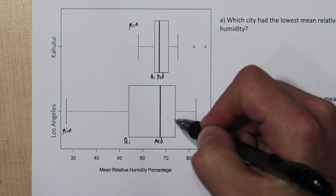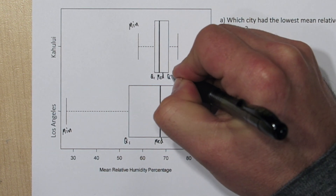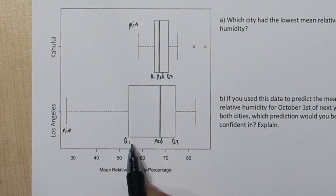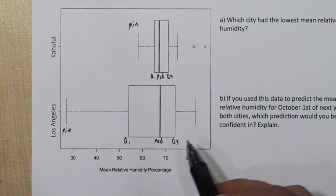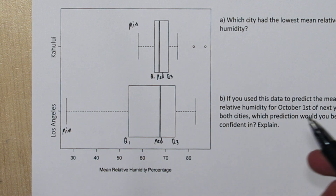The last piece of our box on the right is quartile 3. Quartile 1 divided the lower 25% of observations from the rest of the data, and quartile 3 divides the upper 25% of observations from the rest of the data.